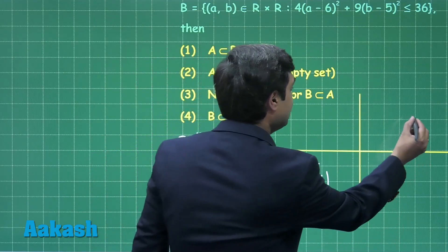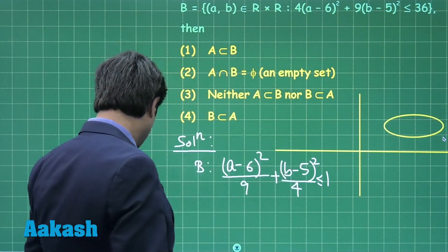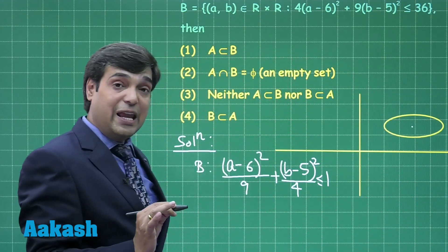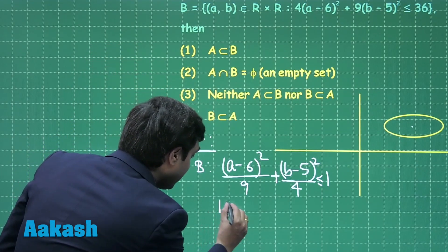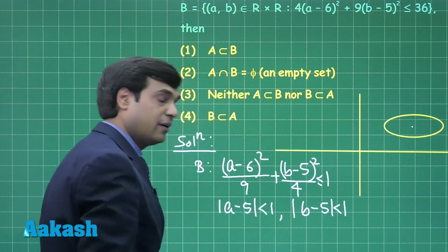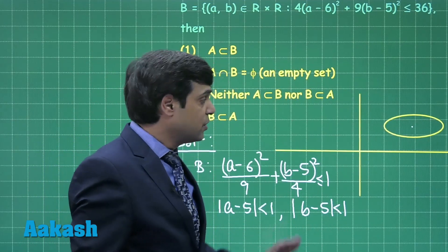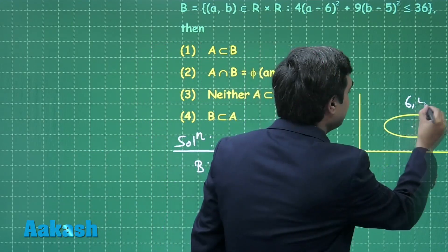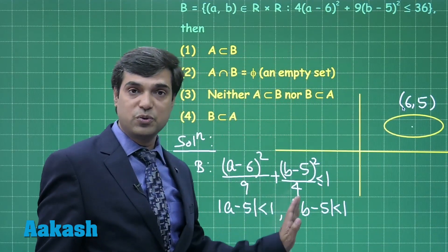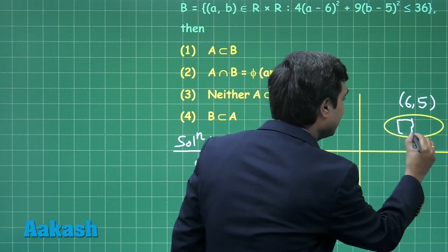Drawing the ellipse with center 6 comma 5. Set A is given such that mod of a minus 5 is less than 1 and mod of b minus 5 is less than 1, meaning a lies between 4 and 6, and b lies between 4 and 6. This forms a square region. Since the center of the ellipse is 6 comma 5, we can see that this entire square region lies inside the ellipse.